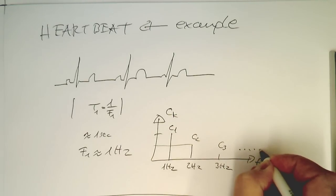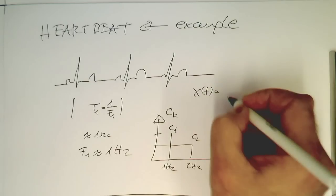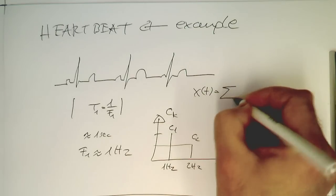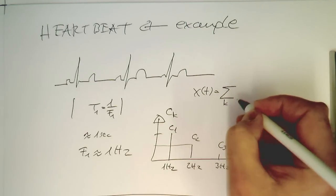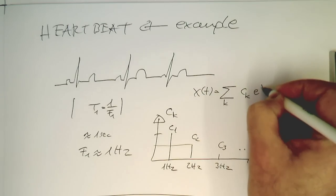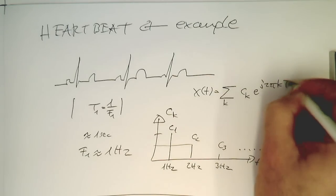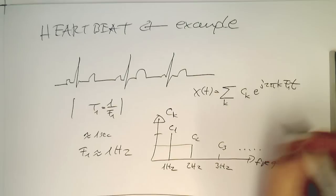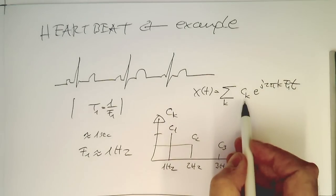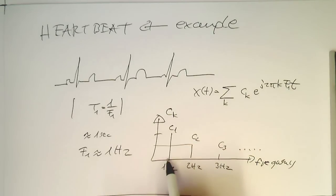Looking at our formula, x(t) as our summation with index k, we have ck e^(j2πkf1t). We see that c1 is our fundamental frequency with k equals 1. This gives us this peak here, and then c2 must be 2 hertz, c3 3 hertz, and so on.